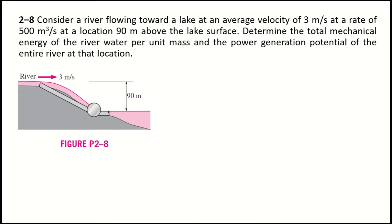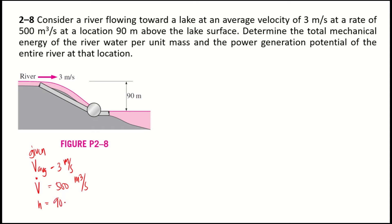Consider a river flowing toward a lake at an average velocity of 3 meters per second, at a rate of 500 cubic meters per second, at a location 90 meters above the lake surface. Determine the total mechanical energy of the river water per unit mass and the power generation potential of the entire river at that location. We have average velocity equal to 3 m/s, volume flow rate equal to 500 m³/s, and height of 90 meters.